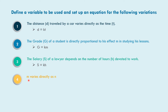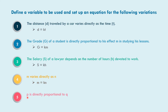Next, how about number four? m varies directly as n. So it means m equals k, k as the constant of variation, times n. Last, for number five, p is directly proportional to q. So it means p equals k times q.